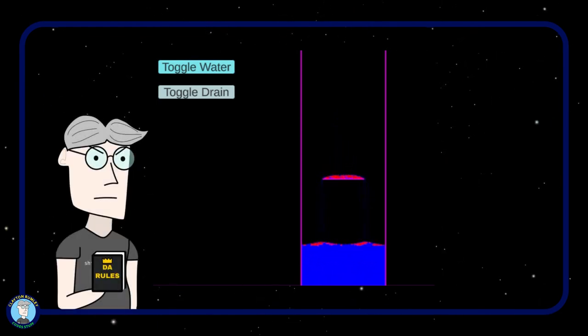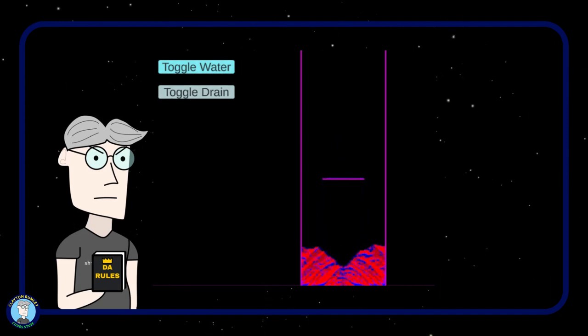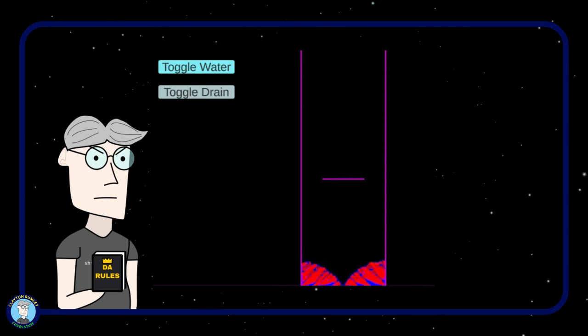I realized it was because of my rule that the cell would only try to move water to the left or right if the cell beneath was completely full. So I took that restriction out and made it transfer water to every surrounding cell that it could if it made sense to.